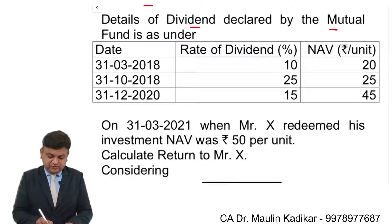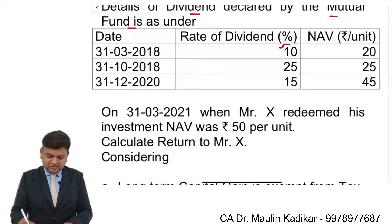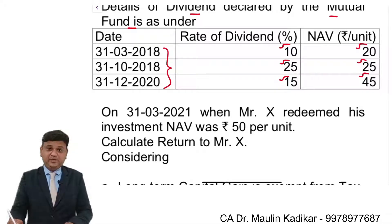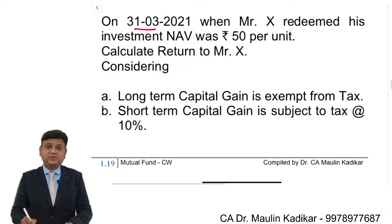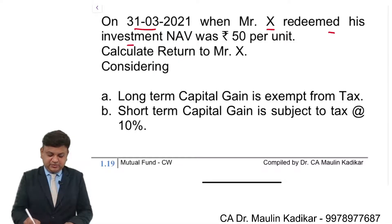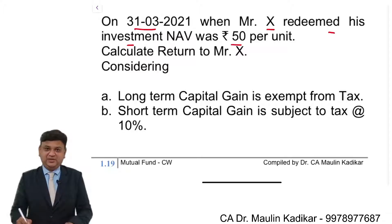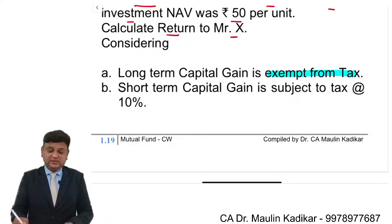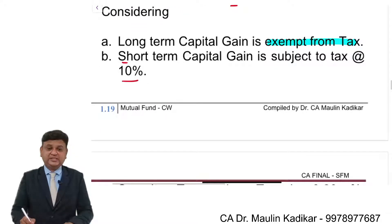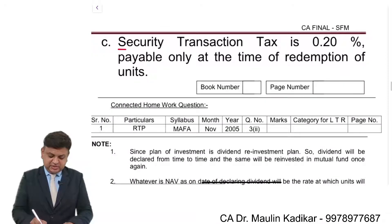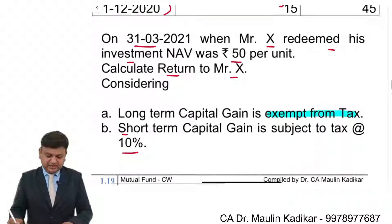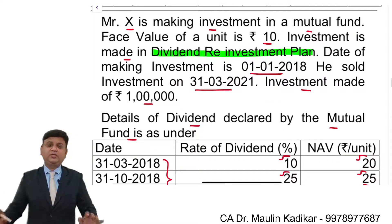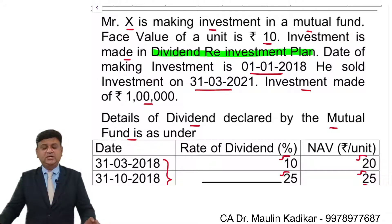Details of the dividend declared by the mutual fund are provided — the rate of dividend is given on certain dates, along with the NAV per unit at that point in time. On 31st of March 2021, Mr. X redeemed his investment at NAV of Rs. 50 per unit. Long-term capital gain is exempt from income tax. Short-term capital gain is taxed at 10%. Security transaction tax is 0.2%, payable only at the time of redemption. Just go through the information; do not solve any part yet.